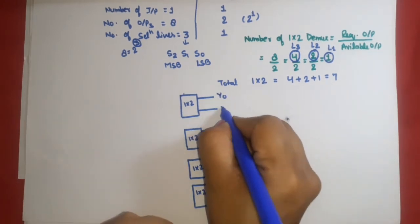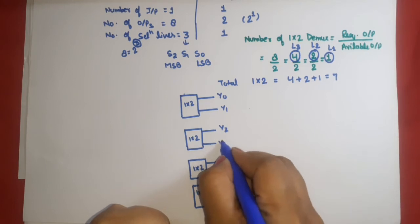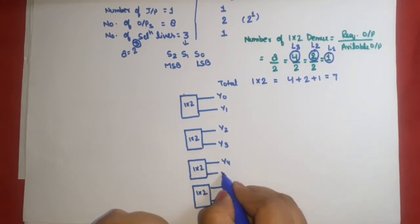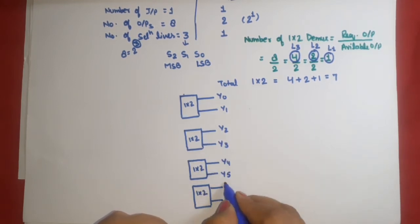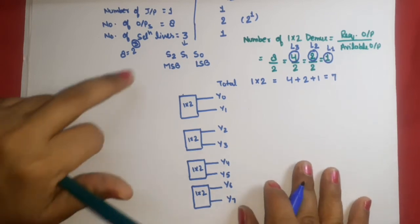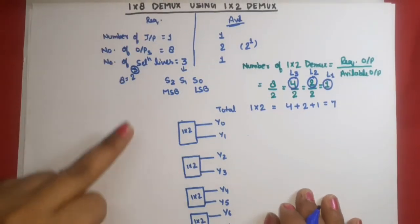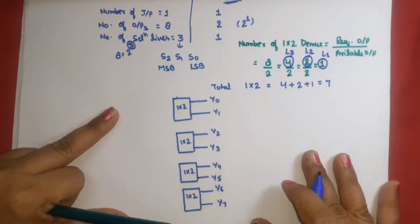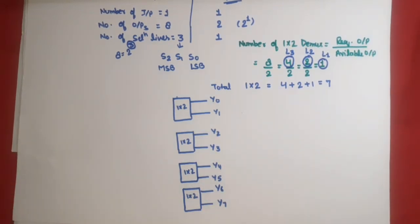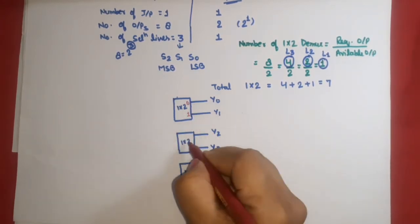The outputs of the four demuxes at level 3 are labeled y0, y1, y2, y3, y4, y5, y6, y7. These are the 8 outputs of our 1-to-8 demultiplexer. Each individual demux has 2 outputs: output 0 and output 1.